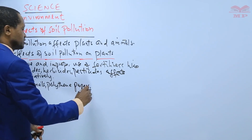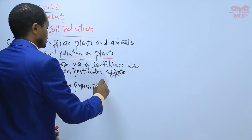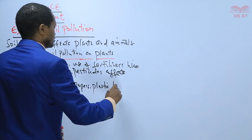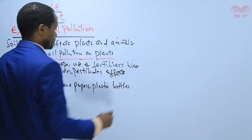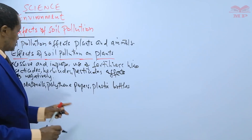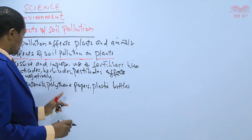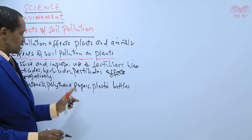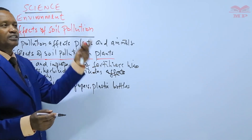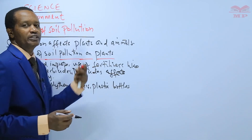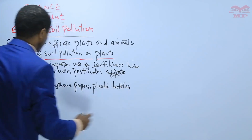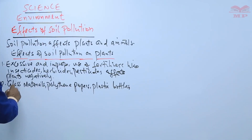Plastic bottles, polythene papers, glass materials — in our last lesson we mentioned rubber remains as well. These are all examples of solid waste that pollute the soil.